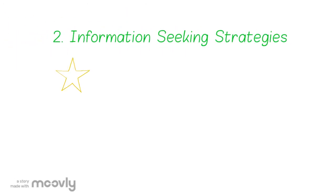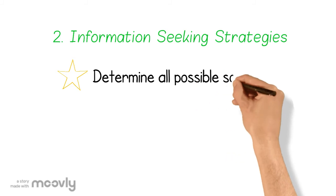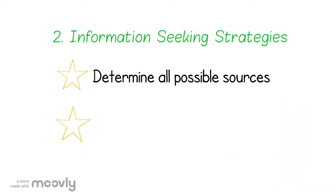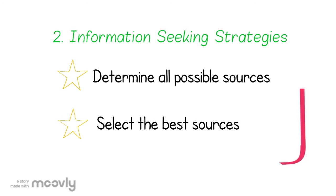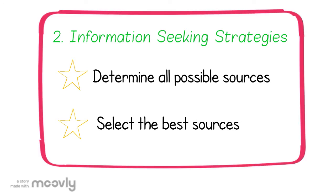Step 2: Information-Seeking Strategies. Determine all possible sources and select the best sources. Ask yourself: Where can I start to look for information? Who can I talk to to get information? What are the best sources to use? Make a list of all possible sources that you think would be the most helpful and select the best ones. And if you don't know, you can ask me, your librarian, for assistance.